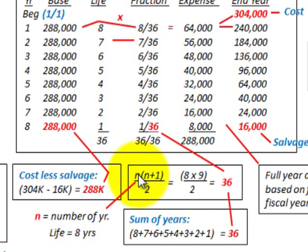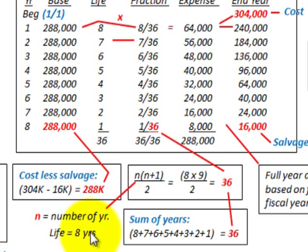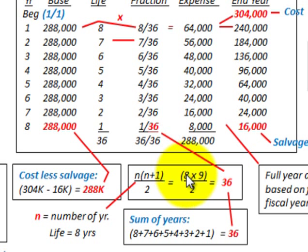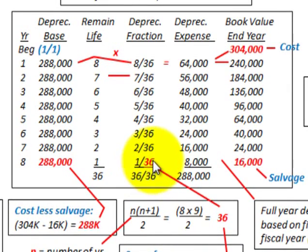We can calculate the sum of the years more easily using the equation: n times (n + 1) divided by 2, where n equals the number of years — in this case the life of the asset, which is 8. So 8 times 9 equals 72, divided by 2 gives us 36. This 36 is going to be our denominator in our depreciation fraction.